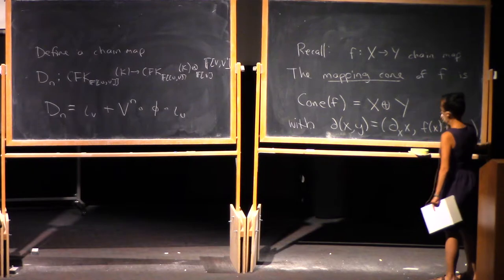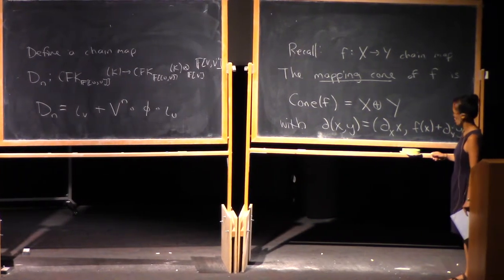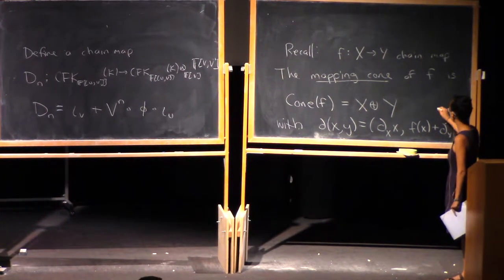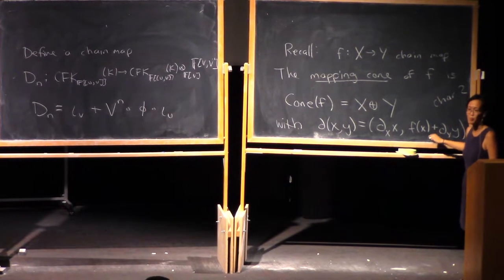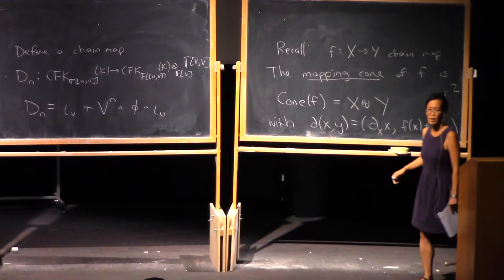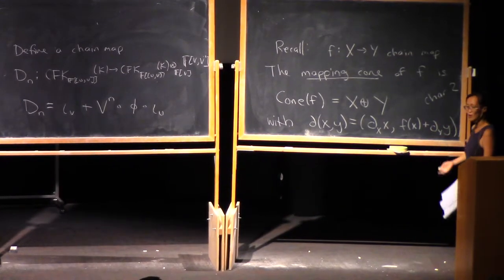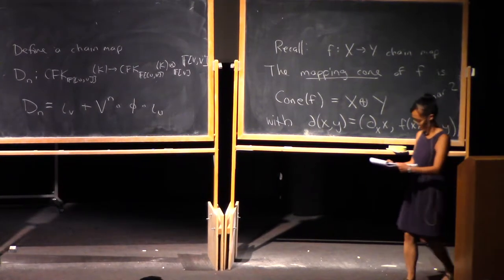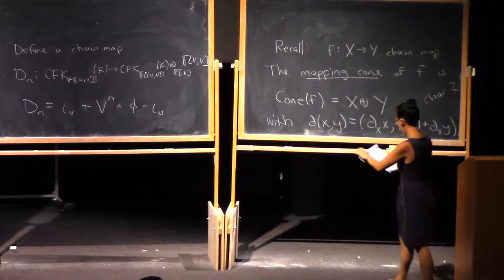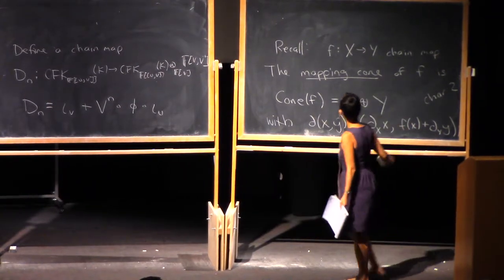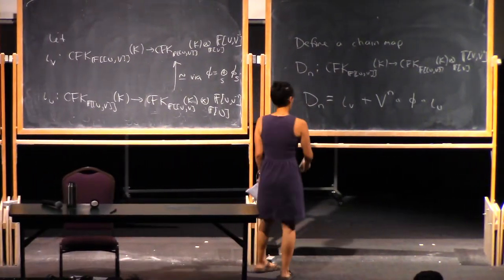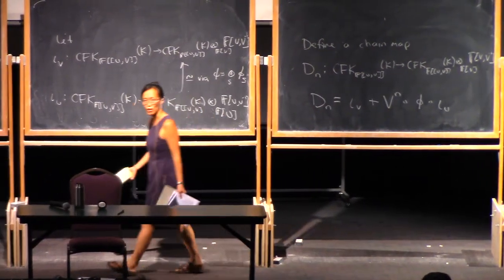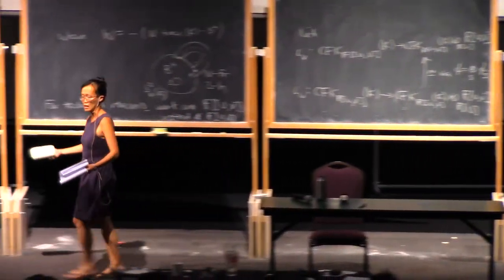and now this is going to be f of x plus the y boundary of y. And this is, I'm working over characteristic 2. So if you're not working over characteristic 2, you need some plus or minus signs depending on the gradings of things. But over characteristic 2, you don't have to worry about plus or minus signs, so life is great. Okay. All right. So, well, we have a chain map here, and it turns out that the mapping cone of that chain map is exactly what we want.